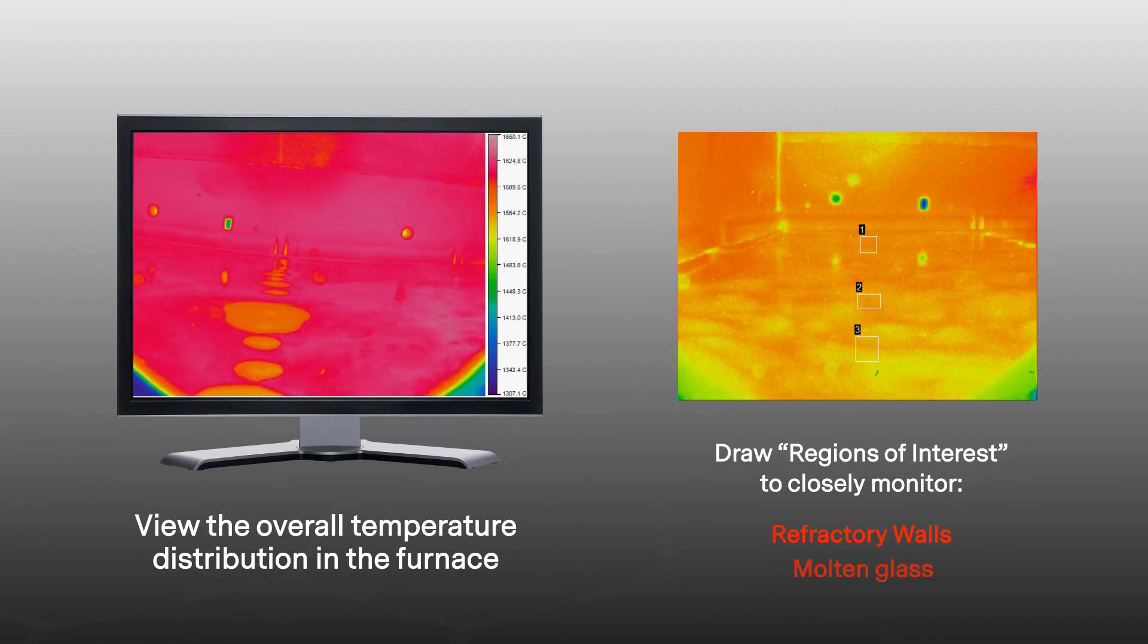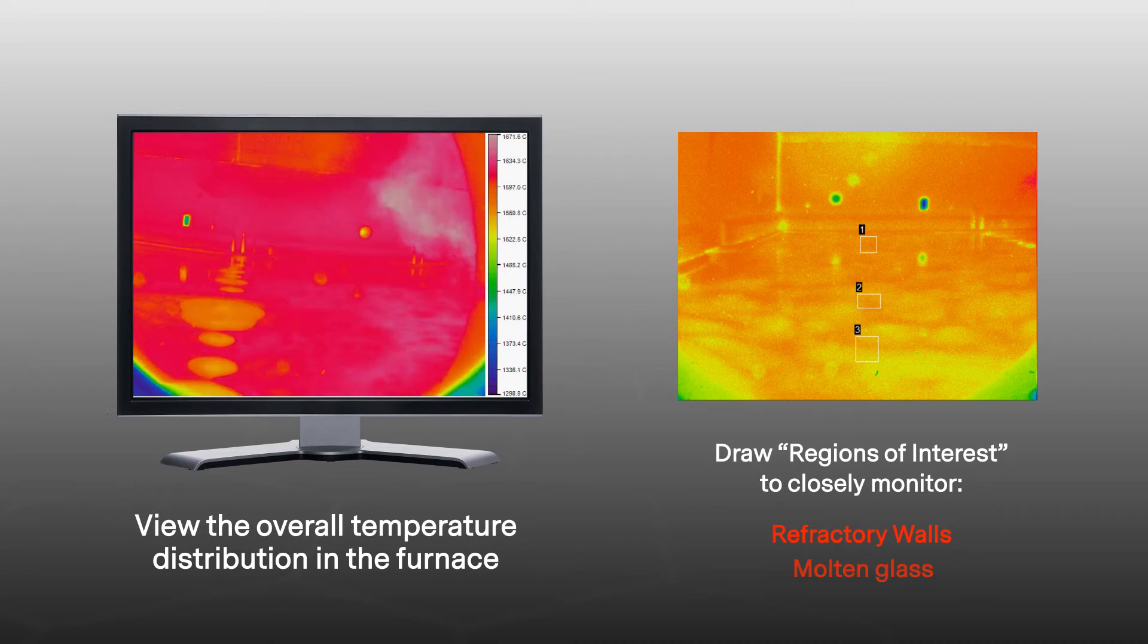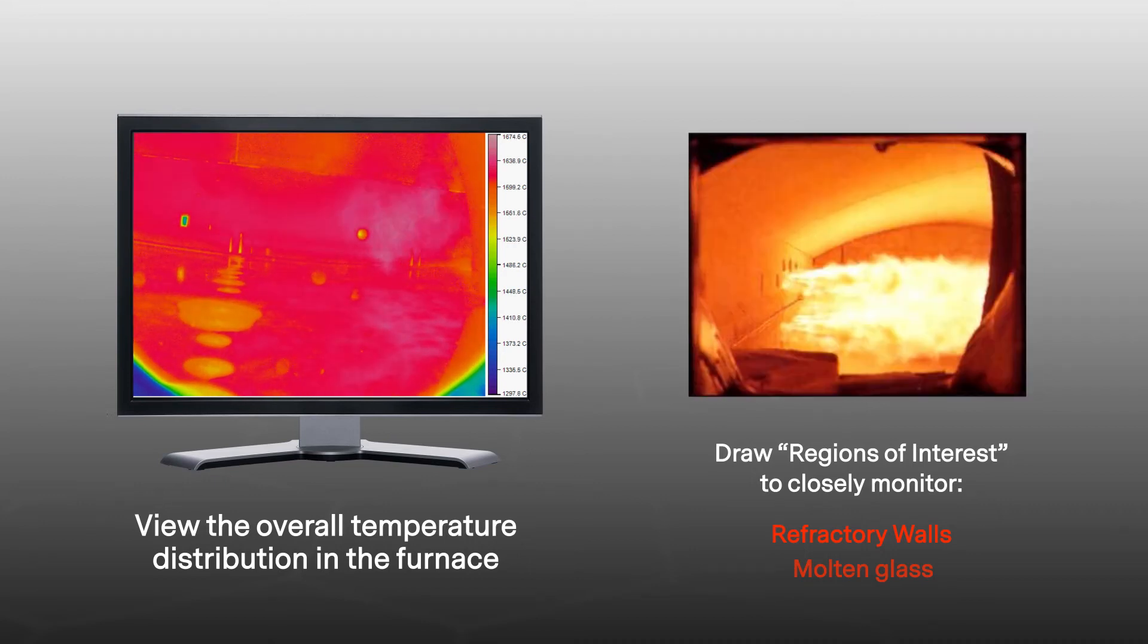The surface of the molten glass can be monitored for an even and stable melting and to help get the right viscosity, and by knowing the actual product temperature, the burners can be adjusted more precisely throughout the melting process.